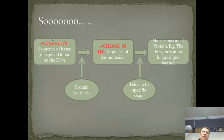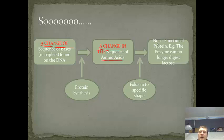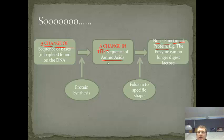An important implication is that the sequence of bases determines the sequence of amino acids, which determines the protein. So if you change the sequence of bases, that changes the sequence of amino acids, which then changes the protein and could render it non-functional. Any mutations — which are changes in the DNA — can therefore have far-reaching consequences.